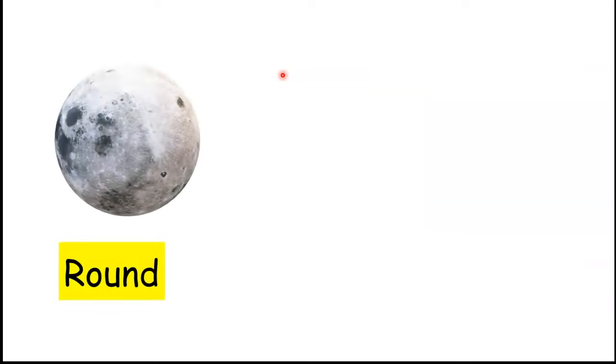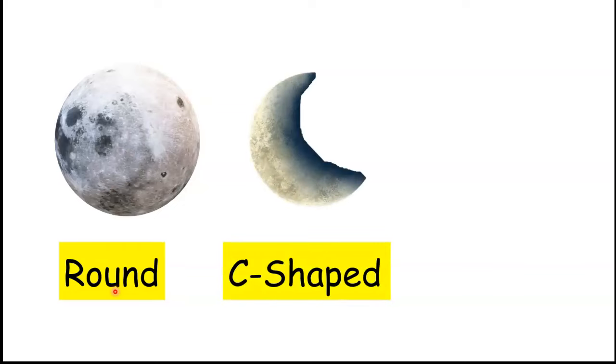The moon changes its shape every night. Sometimes it looks round, sometimes it is C-shaped, and sometimes we don't see any moon at all.